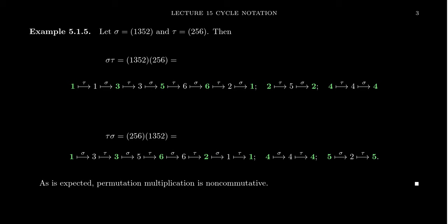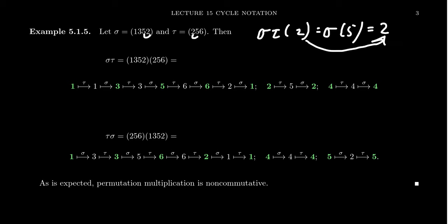If we want to compute sigma tau of 2, tau sends 2 to 5, so this becomes sigma of 5. Then sigma sends 5 back to 2. So sigma tau of 2 actually fixes 2 — tau sends 2 to 5 and sigma sends 5 back to 2, as illustrated right here.